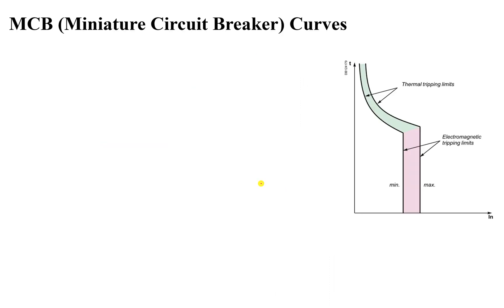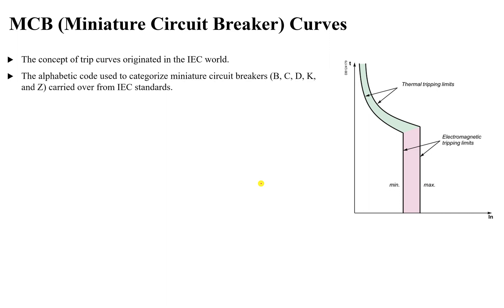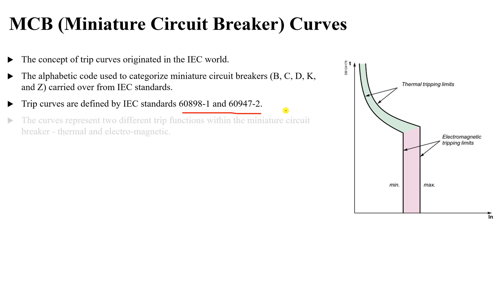Let's start by learning about the miniature circuit breaker curves, or the trip curves inside a circuit breaker. This concept comes from the IEC standard, which defines curves for different types of breakers. There is an alphabetic code to categorize miniature circuit breakers: B, C, D, K, and Z, all coming from IEC standards. These trip curves are defined by the IEC standards.